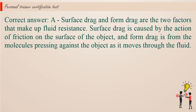Correct answer a. Surface drag and form drag are the two factors that make up fluid resistance. Surface drag is caused by the action of friction on the surface of the object, and form drag is from the molecules pressing against the object as it moves through the fluid.